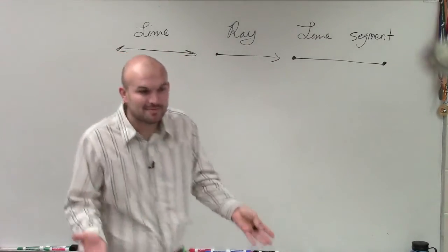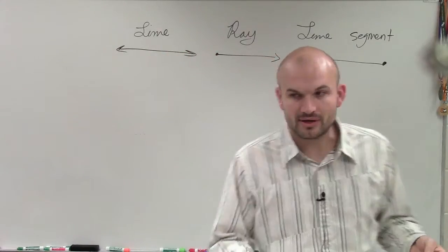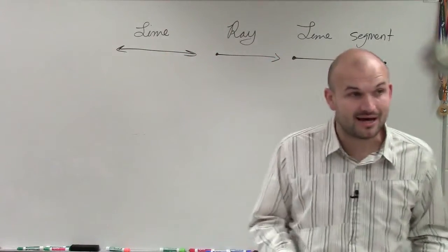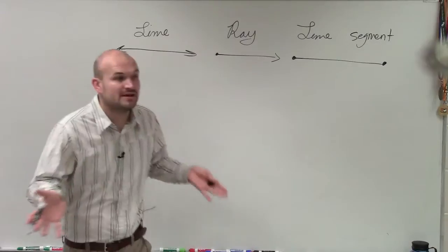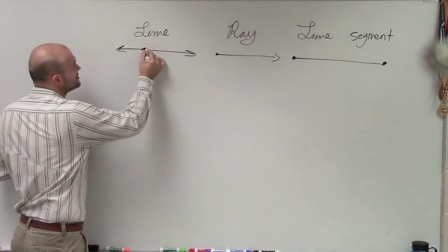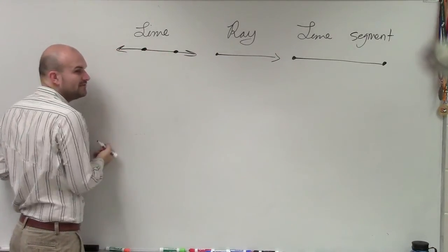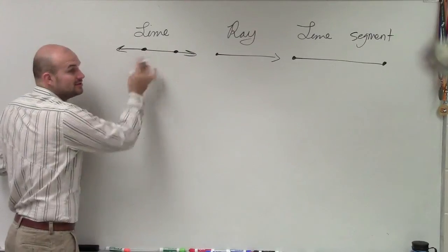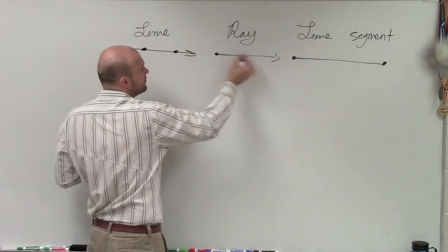So how do we label what a line is? Well, remember, we always say, hey, it takes two points to make a line. But a line contains infinitely many points. So all we need to do is just pick and choose two of the points. There's infinitely many points. You only need two. Same thing with the ray.